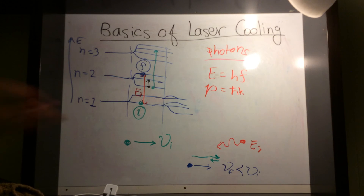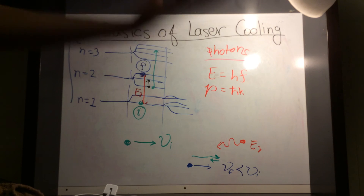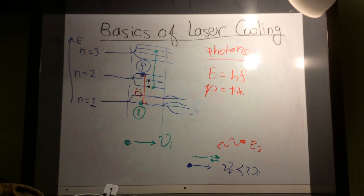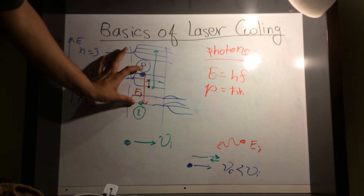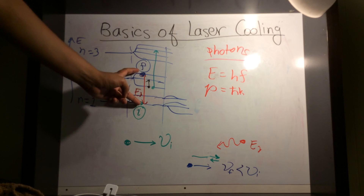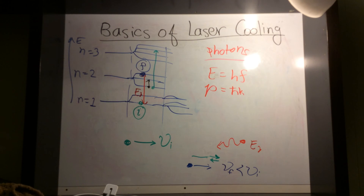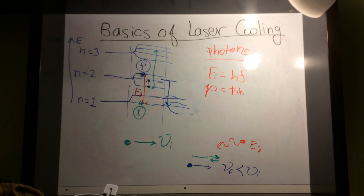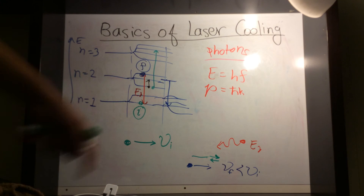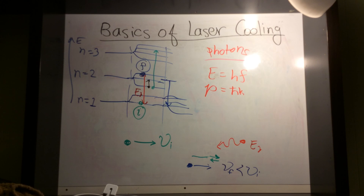Obviously there are more complications. For example, when the atom is traveling, it sees the photon blue-shifted because it's traveling towards the photon. So as it slows down, the photon's energy will change and it will no longer be in resonance with the energy transition — the photons will become see-through and just pass right through the atom. That's one complication, and there are multiple complications. The first person who did this got a Nobel Prize: Steven Chu. And currently this has become very common, and almost everyone in atomic physics does it.